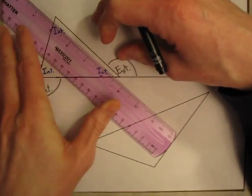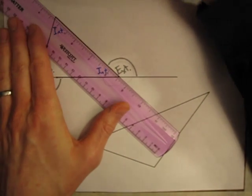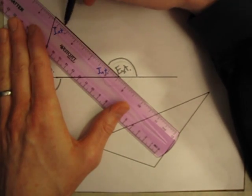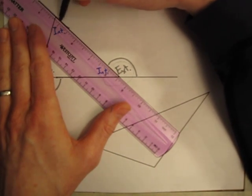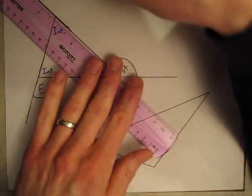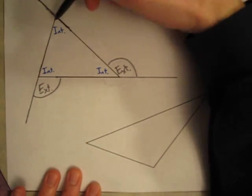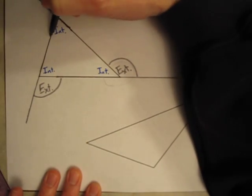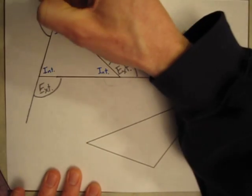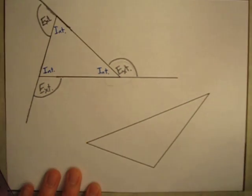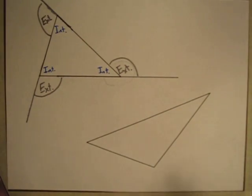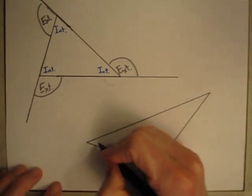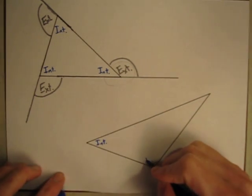I can draw one more over here. If I take this third side of the triangle and extend it out this way, we've got an interior angle adjacent to this exterior angle. I can do the same thing over on this triangle — it has three interior angles inside.